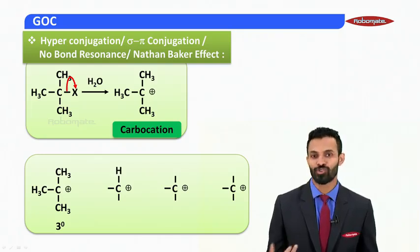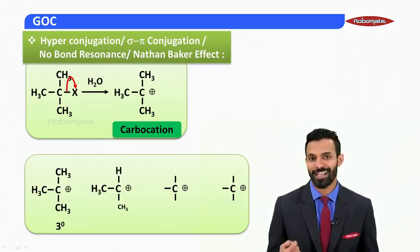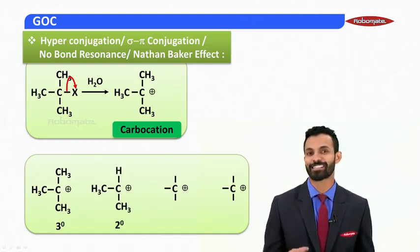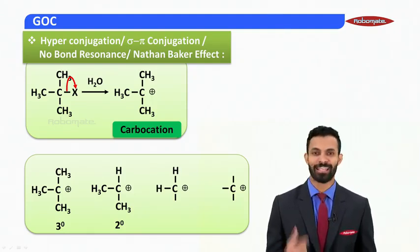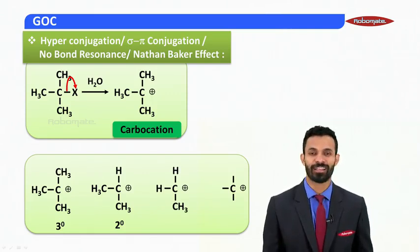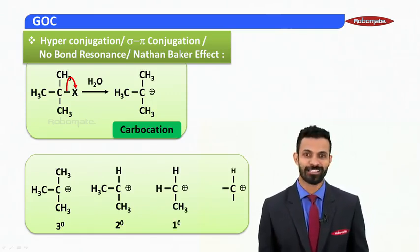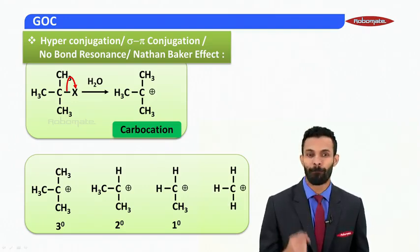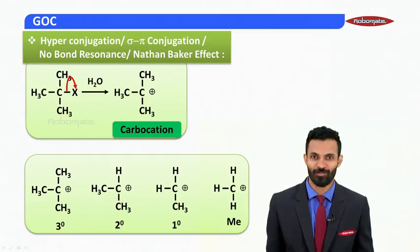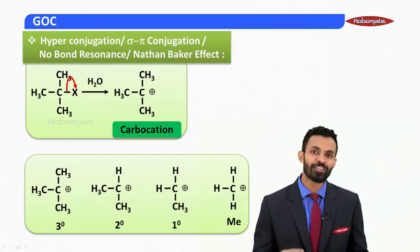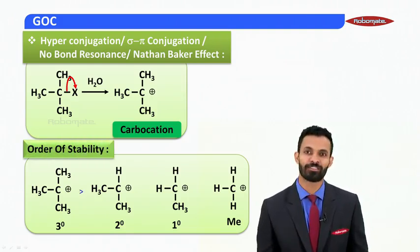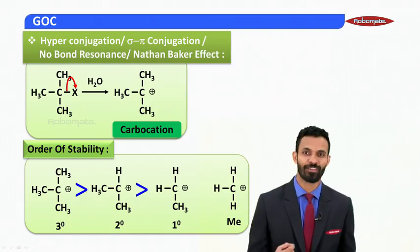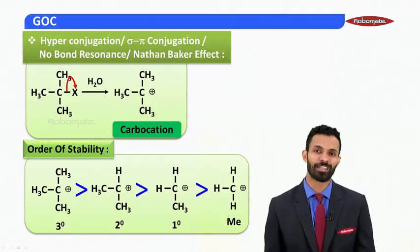If we attach two methyl groups to the carbocationic carbon, it is called a secondary carbocation, since it is attached to two other carbons. If we fill two valences with H and one with a methyl group, the nature of the cationic carbon is primary. And if we fill all the valences with H atoms, we call it a methyl carbocation since it resembles the methyl group. The nature of the carbon carrying the positive charge decides the nature of the carbocation.